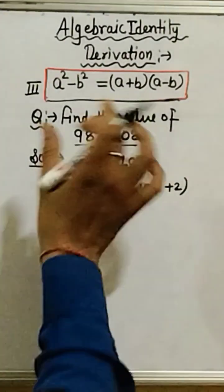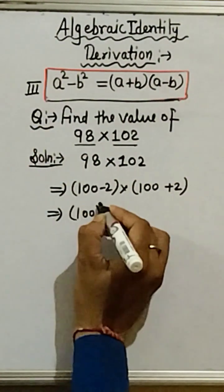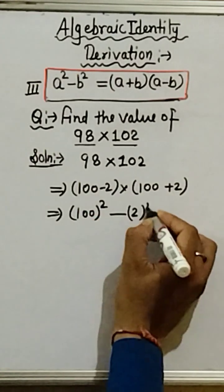So, here we can apply a square minus b square and there is a formula. So, we get 100 square minus 2 square.